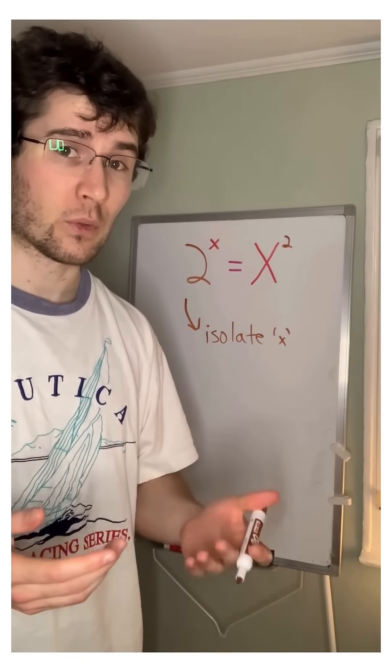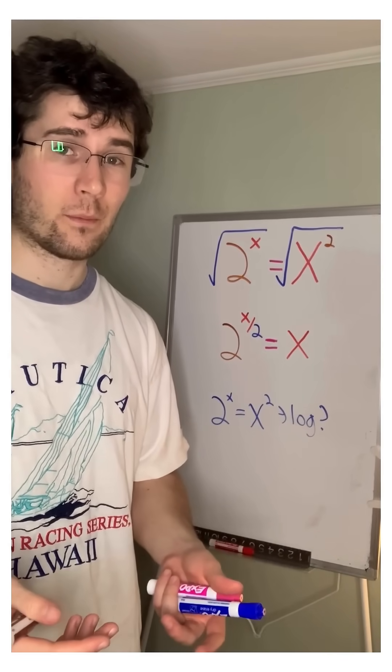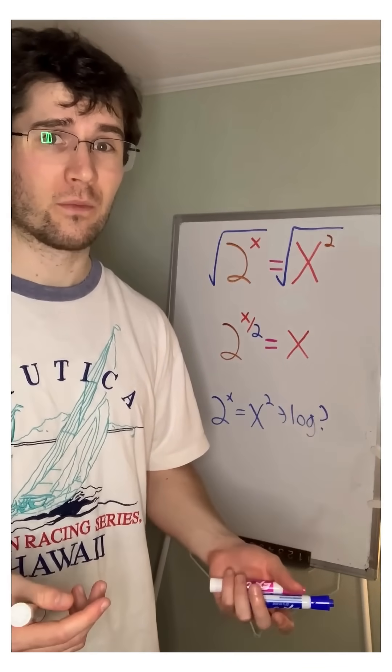So maybe we'll take the square root of both sides. On our right hand side, it looks pretty good. We have an x now, but on our left hand side, it's worse than before. 2 to the x over 2. What do we do with that?